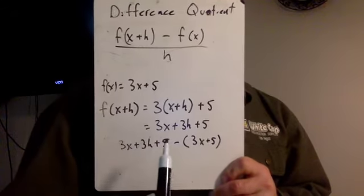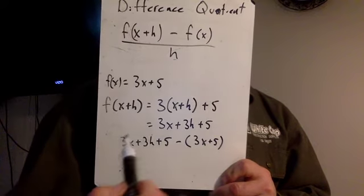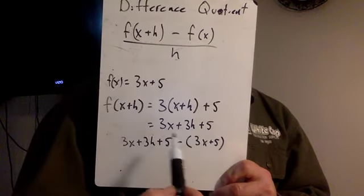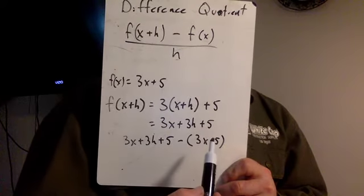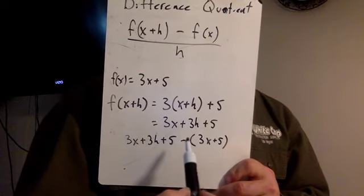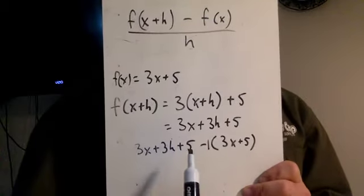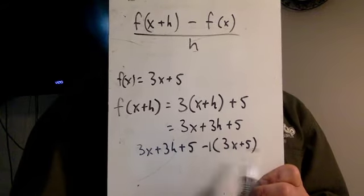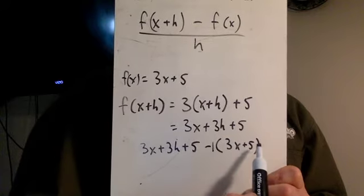Now here's a step that students mess up all the time. They start to combine like terms on the numerator, and they make the 5 and the 5 a 10. Because they're like, well, that's a positive 5, and so is that one. So that should be a 10. Now, it's actually minus 1. You're actually distributing a negative 1 through that parenthesis. Whenever it's just minus a parenthesis, it's really a negative 1. You've got to distribute that negative 1 through.